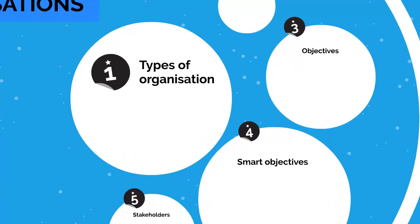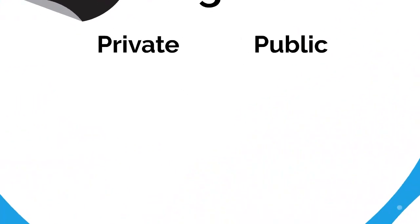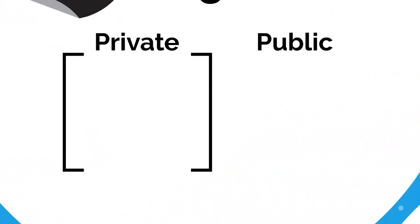There are two main ways to classify an organization. They can be private or they can be public. If an organization is private, what that means is it's owned by private individuals, whereas if it's public it's owned by the state. So let's dig in and have a look at private organizations first of all.